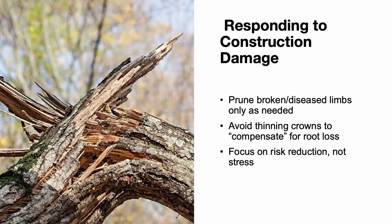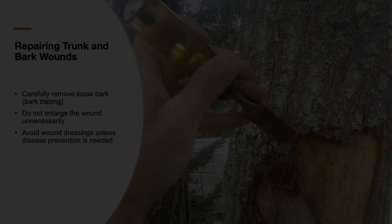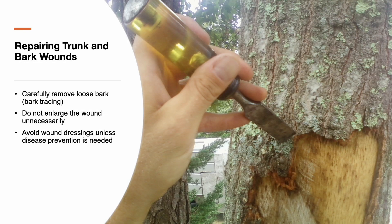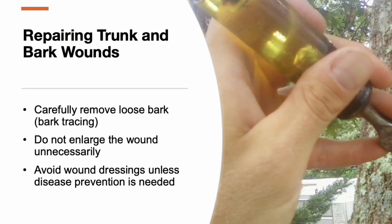Even with the best planning, some trees may still suffer damage. Start by removing broken, dead, or high-risk limbs. Avoid outdated recommendations to thin or reduce the crown to compensate for root loss — this actually stresses the tree further. Limit pruning to essential risk reduction, especially for large, mature trees. If bark has been damaged, remove any loose pieces carefully. This is called bark tracing. Do not enlarge the wound or try to make a neat shape, as this does more harm than good. Avoid applying wound dressings unless disease prevention is required.